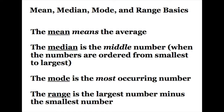Let's go over the mean, median, mode, and range basics. The mean means the average, and we'll go over how to find the average in just a minute. The median is the middle number when the numbers are ordered from smallest to largest. It's very important to remember to order the numbers from smallest to largest.